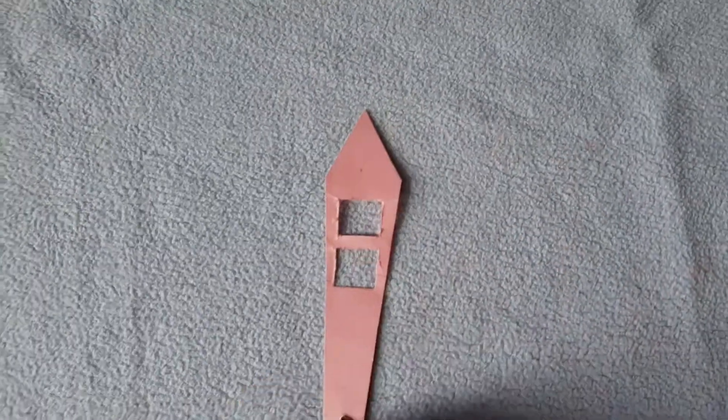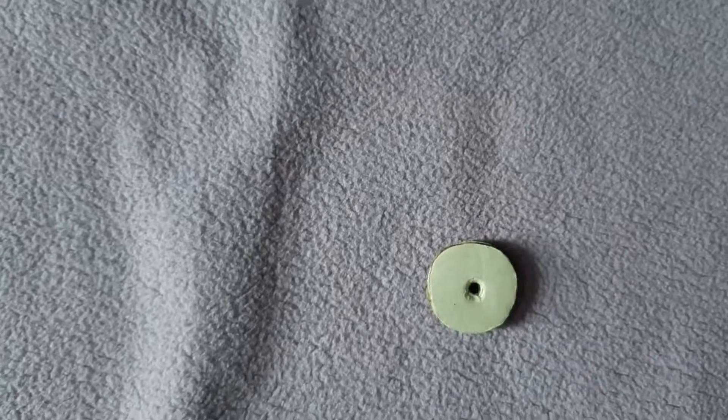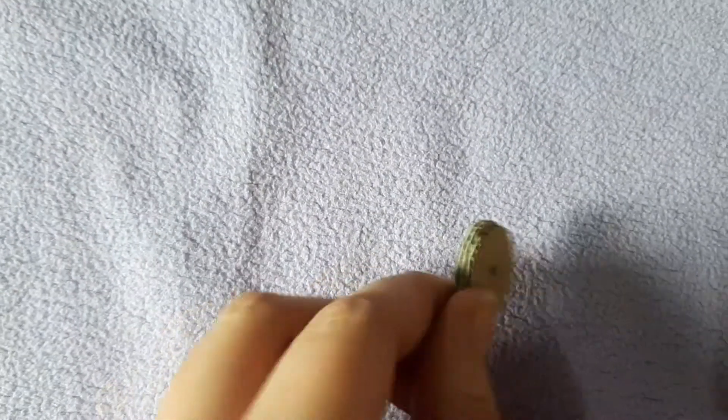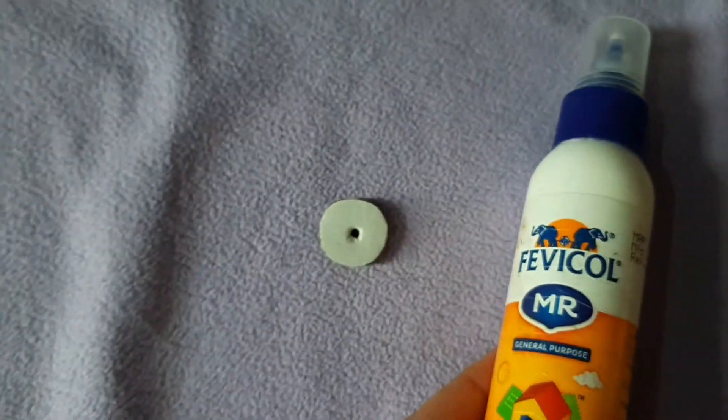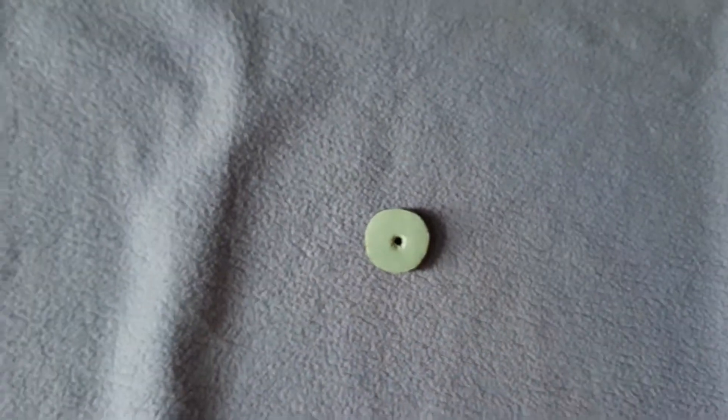Now here you have to cut small circles and make a hole between them. You have to make two pairs of these type of circles.